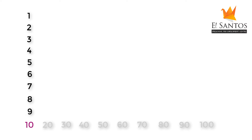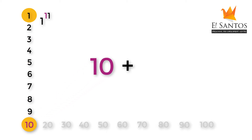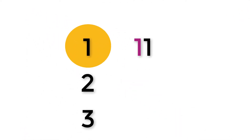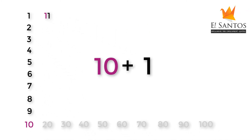Now, we know that after 10 comes 11. But where did 11 come from? Listen and watch carefully children — 11 is made from 10 and 1. When 1 joins 10, it takes 0's place because 0 has no value. The number 1 just kicks out 0 and sits in its place to become 11. So 11 is made from 10 and 1. Remember, not 1 and 1 — it's 10 and 1.